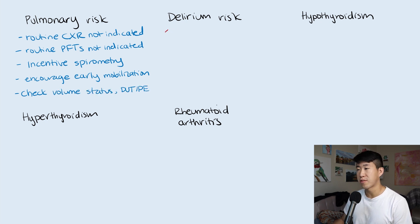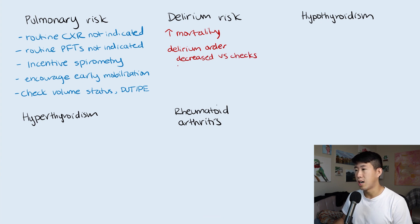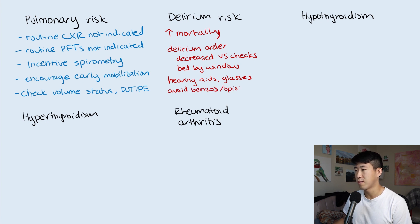Delirium is very common after surgery and increases the risk of mortality, especially in geriatric hip fracture patients with baseline dementia. Optimize everything to reduce delirium risk using a delirium order set. This typically includes decreased overnight vital sign checks for more restful sleep, bed by the window, providing hearing aids and glasses, avoiding benzos and opioids, removing Foleys and lines as quickly as possible, and encouraging family to be at bedside to reorient the patient.